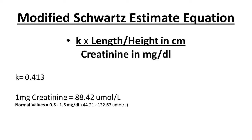The modified Schwartz estimate equation is used to calculate GFR. K is a constant equal to 0.413. The formula is: K multiplied by the length or height of the patient in centimeters, divided by creatinine in milligrams per deciliter. Normally in SI units, creatinine is in micromoles per liter; to convert to mg/dL, divide by 88.42. The normal creatinine value is 0.5 to 1.5 mg/dL, or 44.21 to 132.63 micromoles per liter.